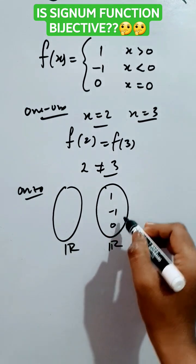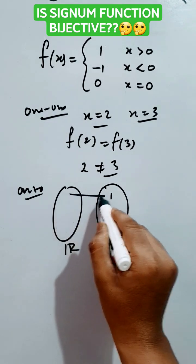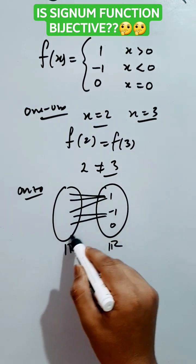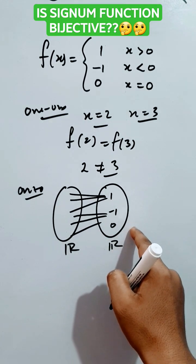1, minus 1, and 0. These are the only values of x from all of the values coming from domain set. The range set is not equals to the co-domain set.